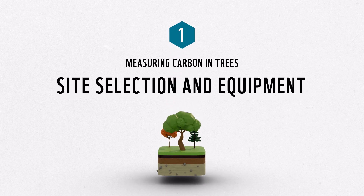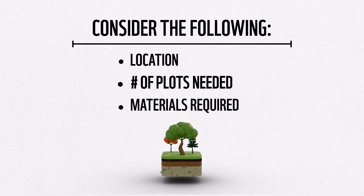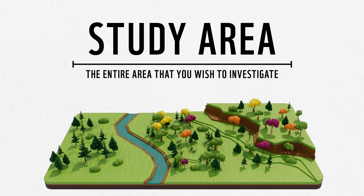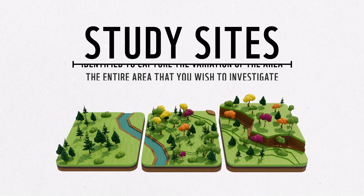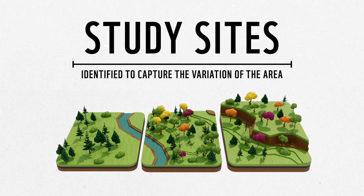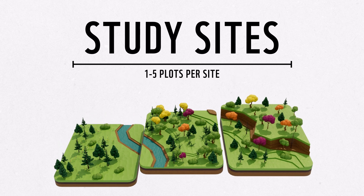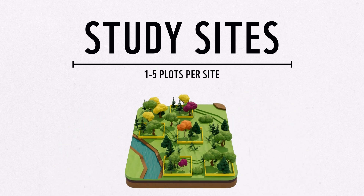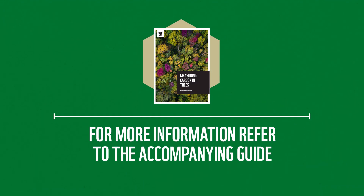Before conducting tree surveys, it's important to think about site selection. Consider, for example, where plots will be set up, how many plots are needed, and what materials are required. Your study area encompasses the entire area that you wish to investigate. Within this large area, specific smaller study sites are identified to capture the variation of the area. Sites can be distinguished by changes in vegetation cover, elevation, ecosystem type, or other geographical features that may vary across the study area. Within each site, one to five plots can be established, depending on the nature of the site. The more natural variation that exists across a site, the more plots that are required. For further details on establishing sites and plots, please see the accompanying guide.